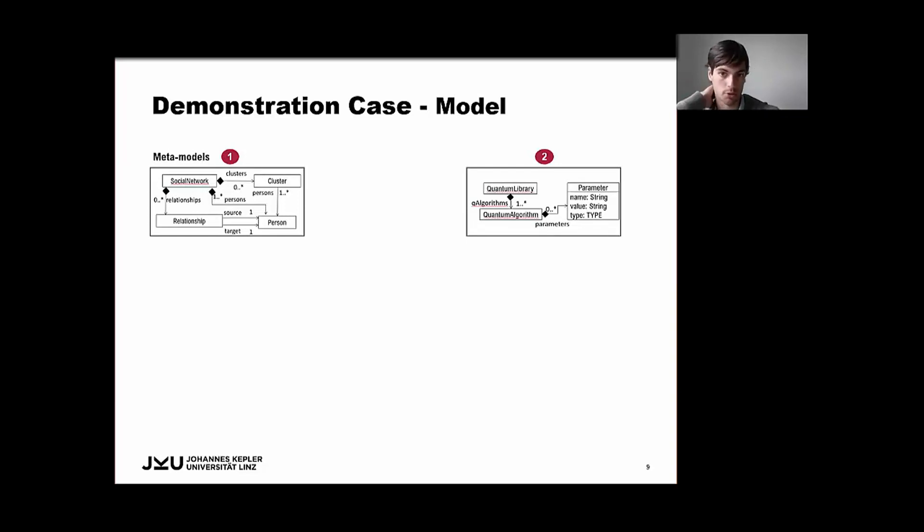So these quantum algorithms belong to a quantum library, which contains various kinds of such algorithms. And some of these algorithms may be further specified for one or several parameters. And the remaining part in the middle serves as the bridge between the quantum computing and the social network metamodel, with the algorithm execution class as the main element.